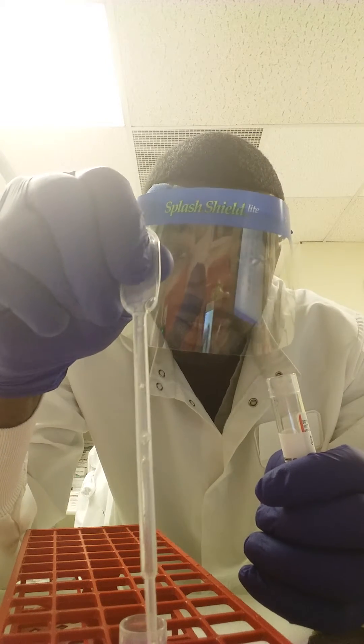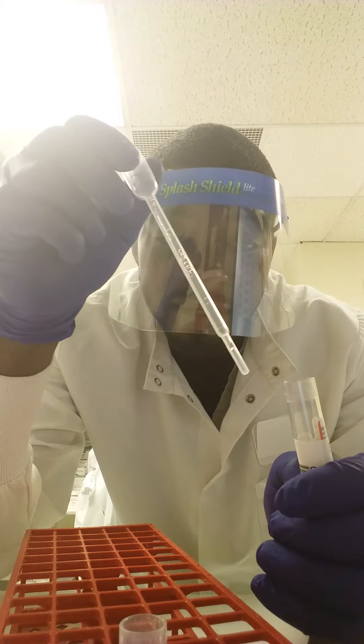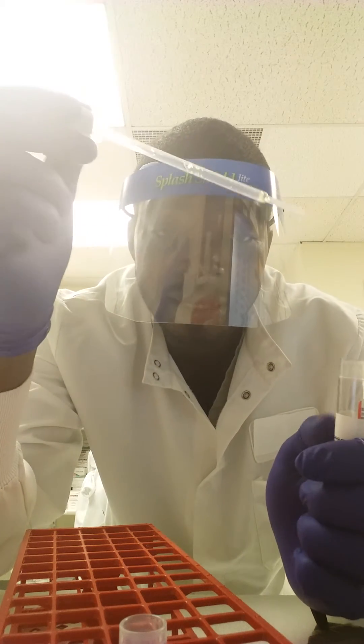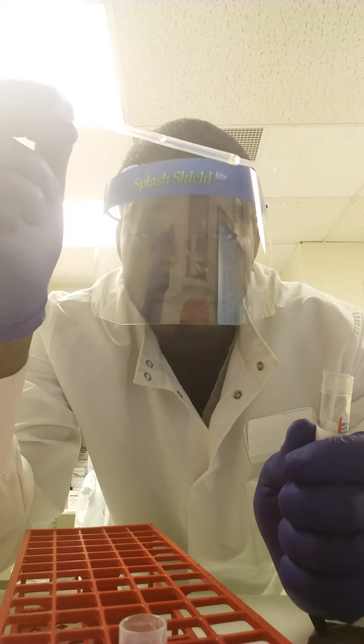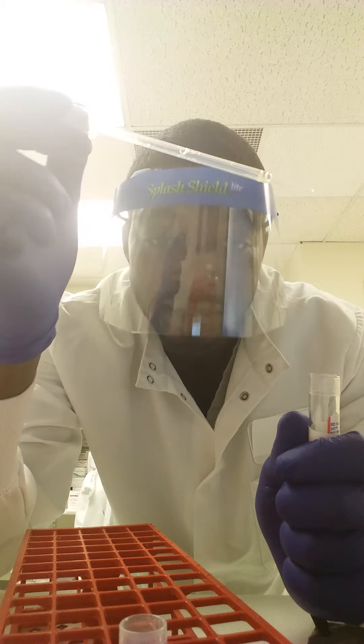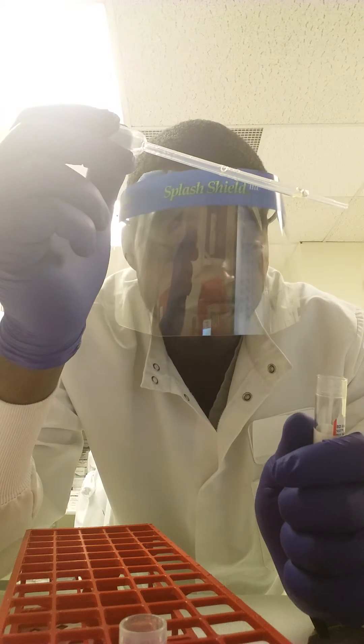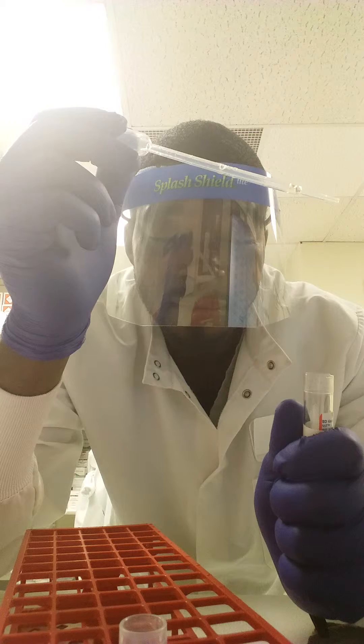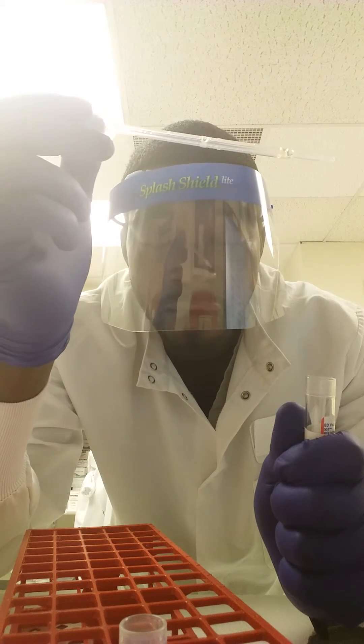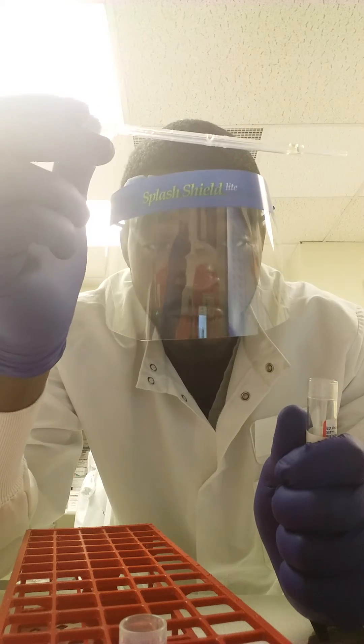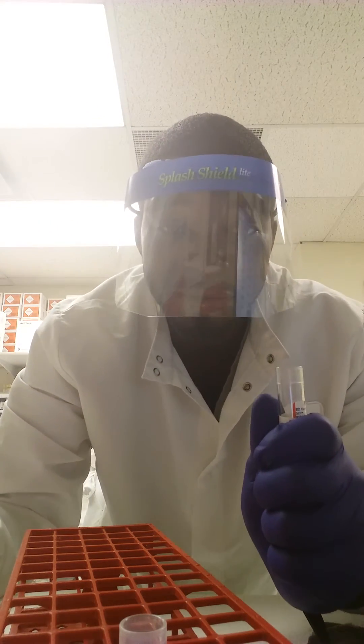And put it inside of whatever container is required to run a test, and that is it my friends. That's how you separate serum from whole blood from an SST tube. In my next video I will be showing you guys how to separate plasma from whole blood, so stay tuned.